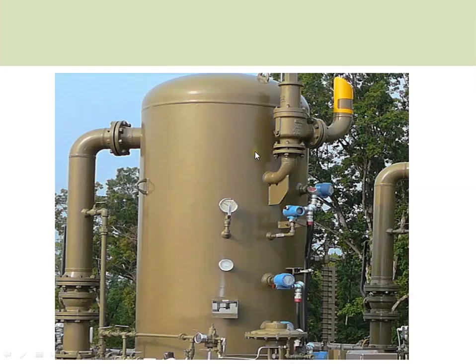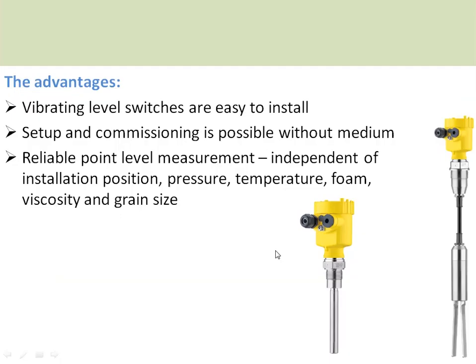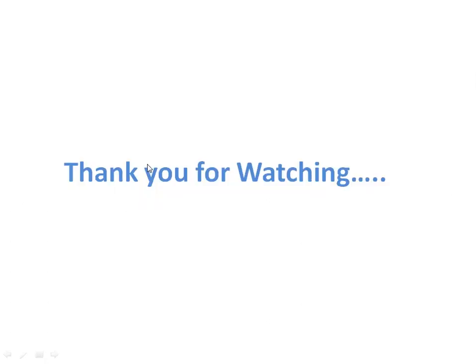These are typical examples of where vibrating level switches are connected to a tank for controlling or monitoring applications. The advantages of this vibrating type level switch are: it is very easy to install, setup and commissioning is possible without the medium present, and it is independent of pressure, temperature, foam, viscosity, grain size, and installation position. It is commonly used for point level control applications.